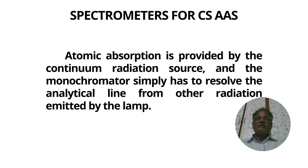Spectrometers for continuum-source AAS use a continuum radiation source, and the monochromator simply has to resolve the analytical line from other radiation emitted by the lamp. For this purpose, a high-resolution monochromator can be used.